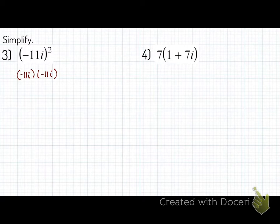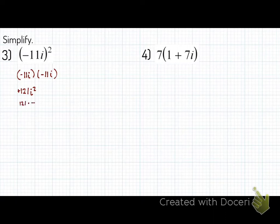You should have worked this out. Here's what you should have had. Negative 11 times negative 11 is going to be positive 121. And then i times i is i squared. Remember, i squared is equal to negative 1, so it's like saying 121 times a negative sign. Positive 121 times a negative sign is negative 121. That's your answer — it just becomes a real number. Kind of weird, but we'll talk about this more as we move on.